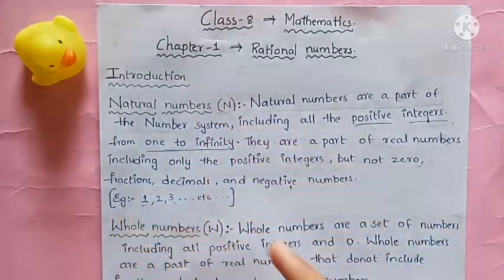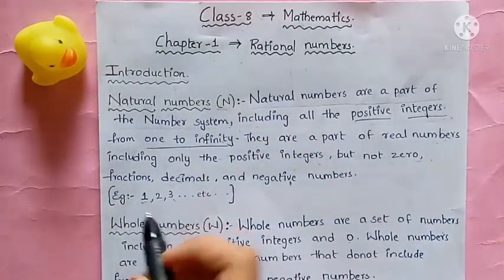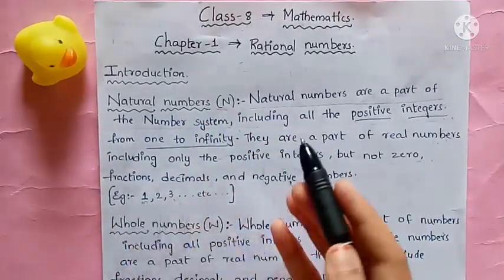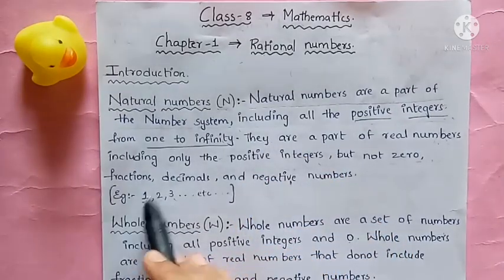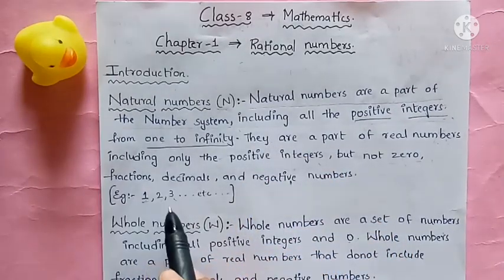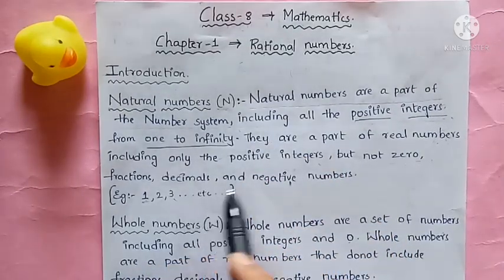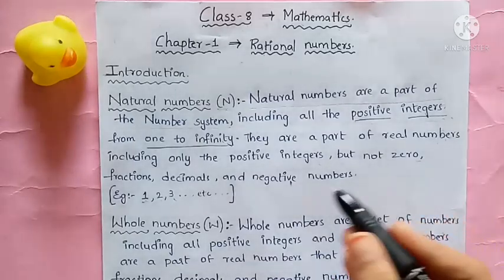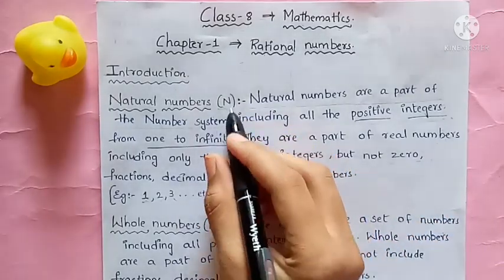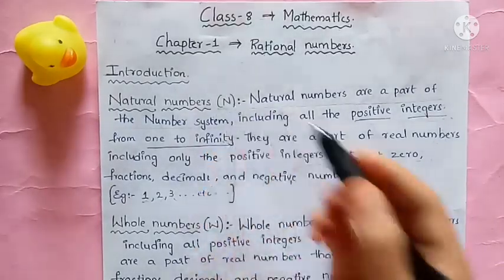Now let's look at examples. Examples of natural numbers: 1, 2, 3, 4, 5, 6 and so on. Natural numbers are denoted by N.